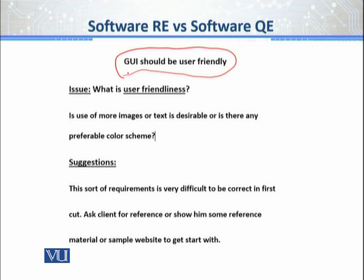This requirement seems very simple. But when you pass this requirement to the developer or software architect, the first question they should ask is: what is user friendliness? What exactly makes a GUI or a website user friendly? This is a very open question — it is a highly ambiguous requirement with a lot of confusion and open areas inside it.